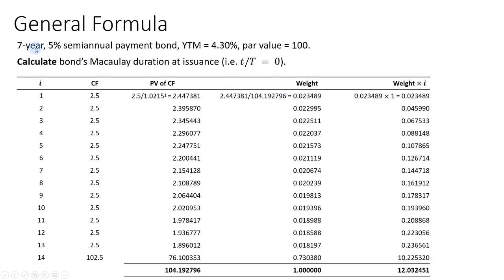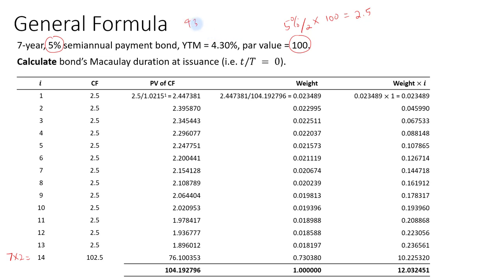To illustrate the general formula, we'll apply this to the example. For this 7-year bond, we define it in terms of semi-annual periods: 7 times 2 gives 14 semi-annual periods. The coupon per period is 5% times par value divided by 2, so 5% divided by 2 times 100 equals $2.50 every 6 months. The yield to maturity is also divided by 2 to get the yield per period: 4.3% over 2 equals 2.15%. We'll calculate the Macaulay duration at issuance.